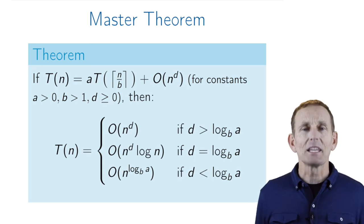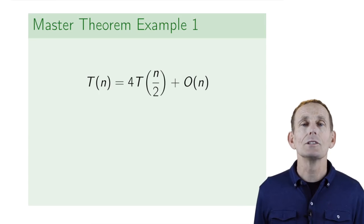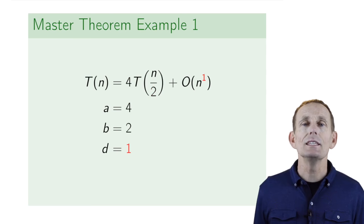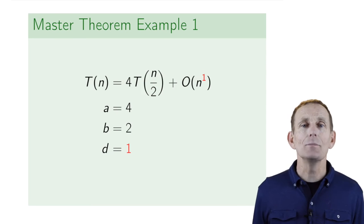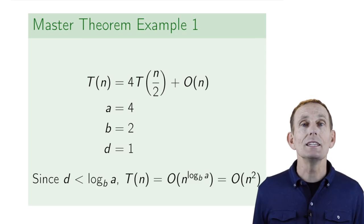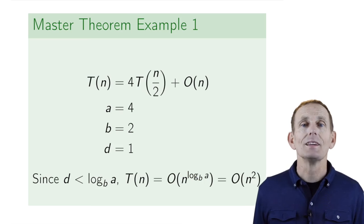So let's look at some applications of this theorem. Here's one where we go back to the polynomial multiplication. Here, a is 4, b is 2, and d is 1, because big O of n is just big O of n to the 1. And we look at the relationship between d, which is 1, and log base b of a, which is log base 2 of 4, or 2. Well, clearly d is less than log base b of a, so we're in case 3. Therefore, T(n) equals big O of n to the log base b of a, or just big O of n squared.